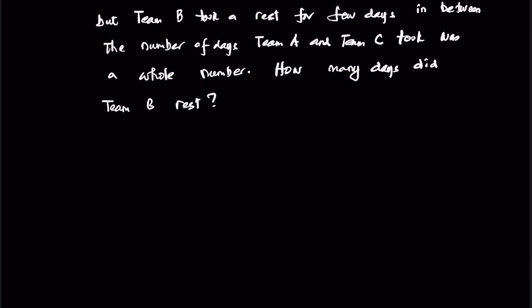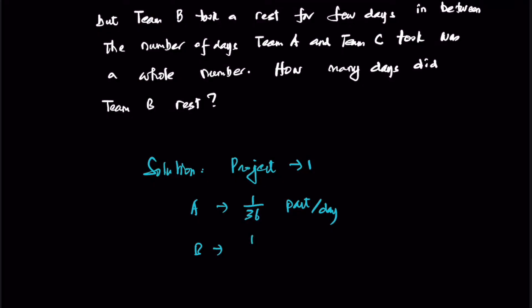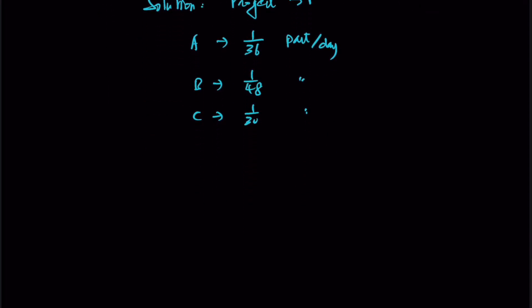For a question of this nature, we consider the project as one. The rates of work for each team are therefore: Team A is 1/36 part per day, Team B is 1/48, and Team C is 1/30. Now we need a common multiple.